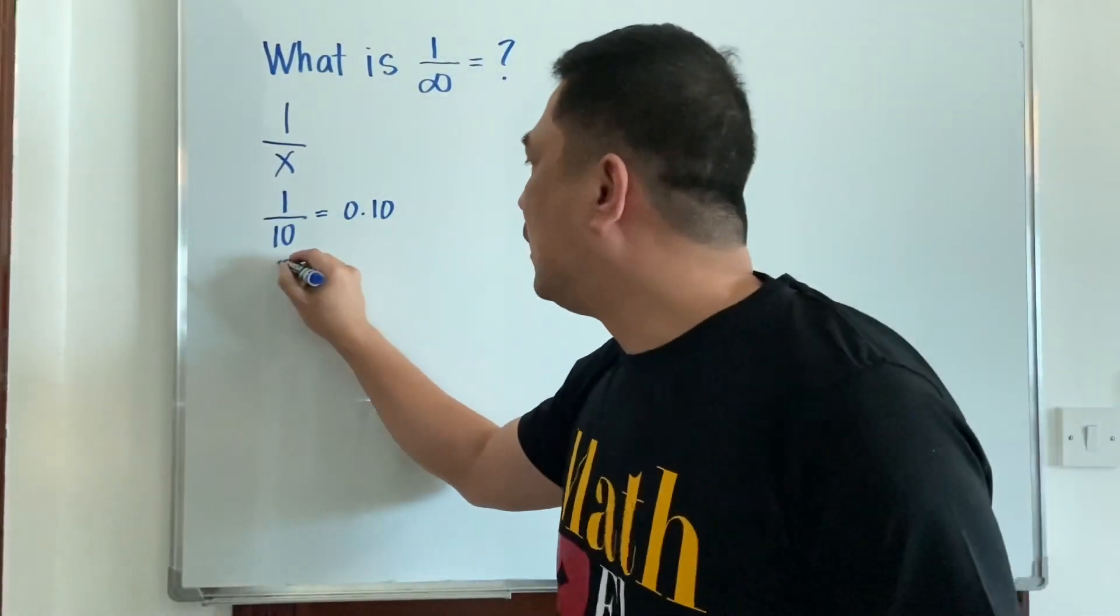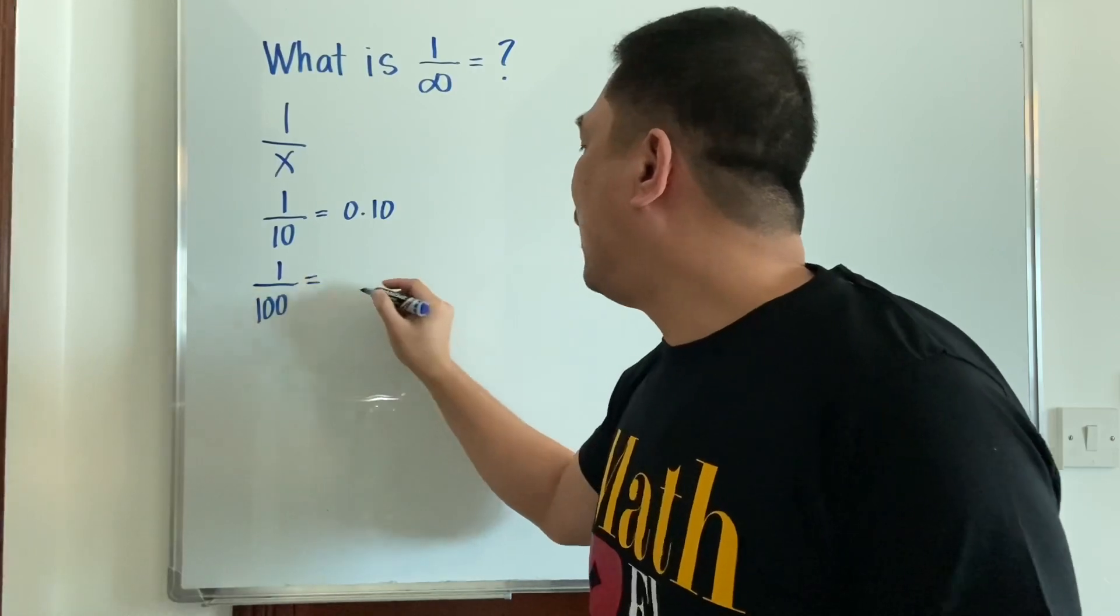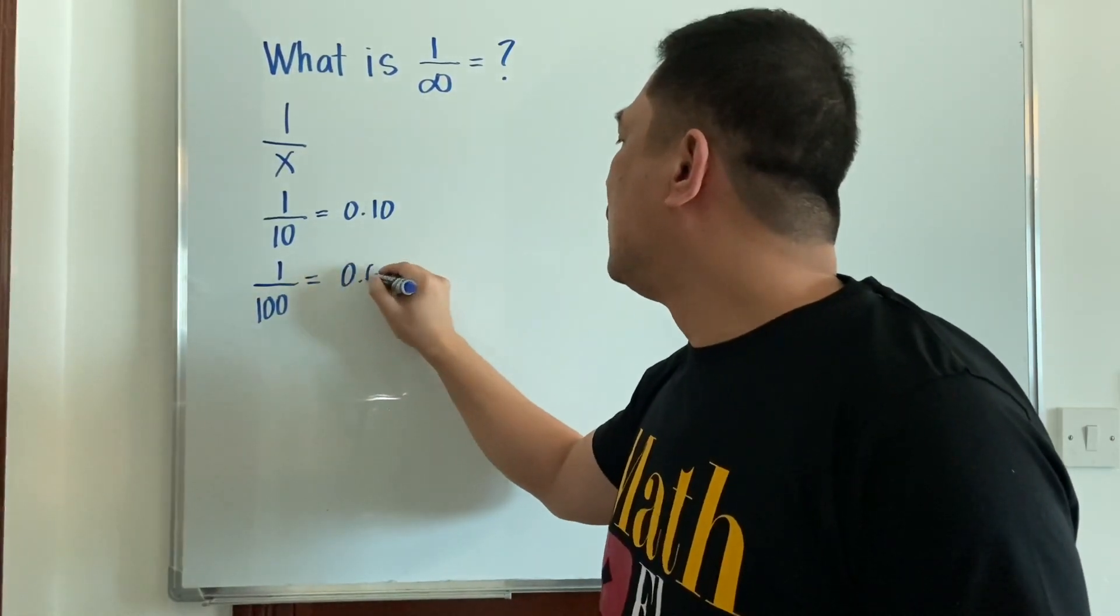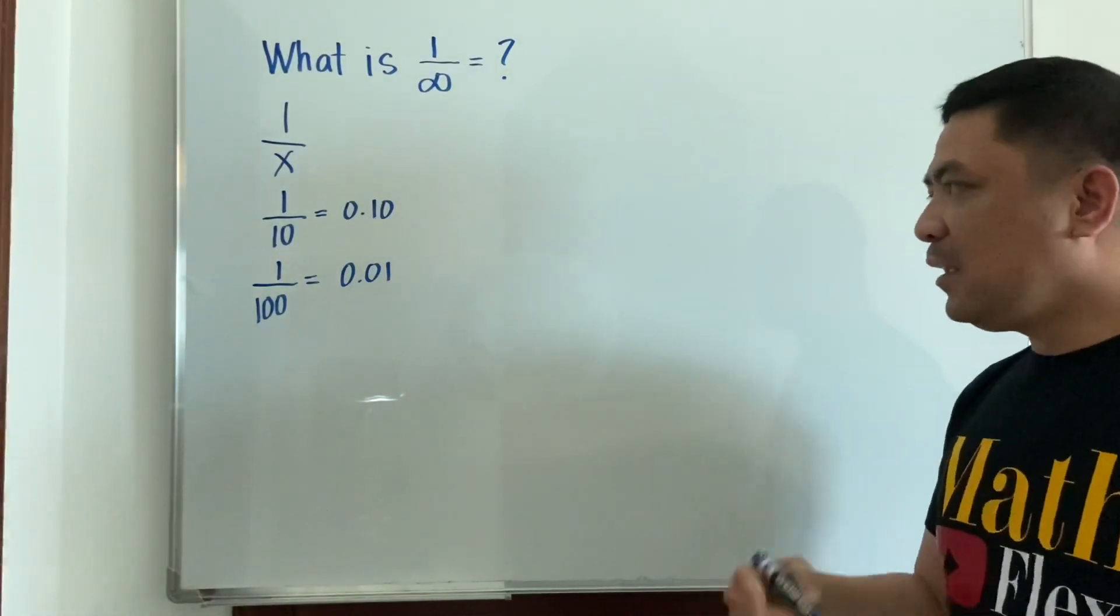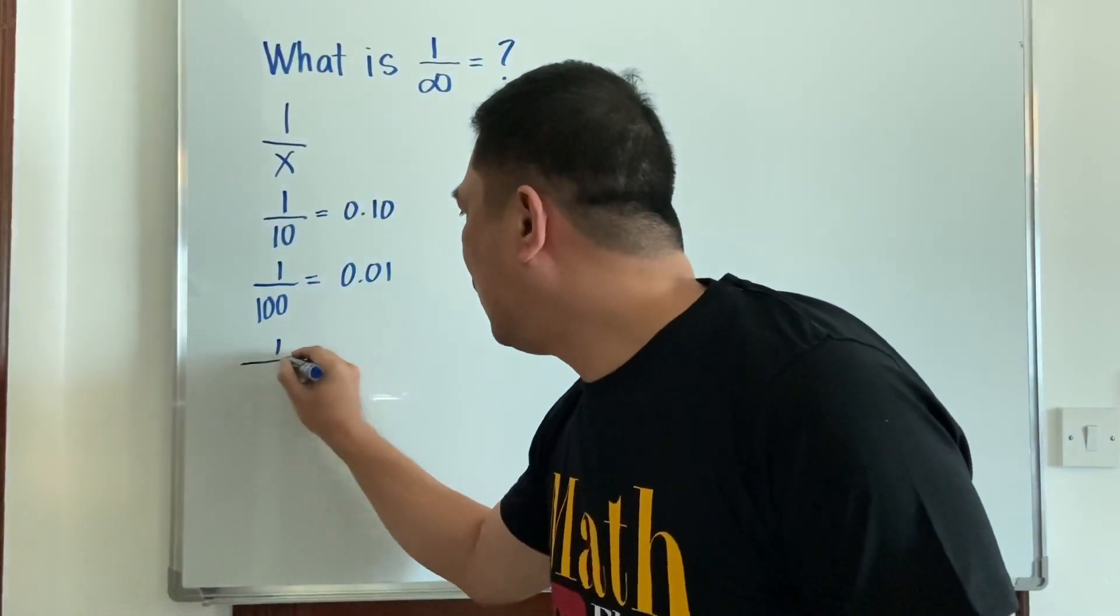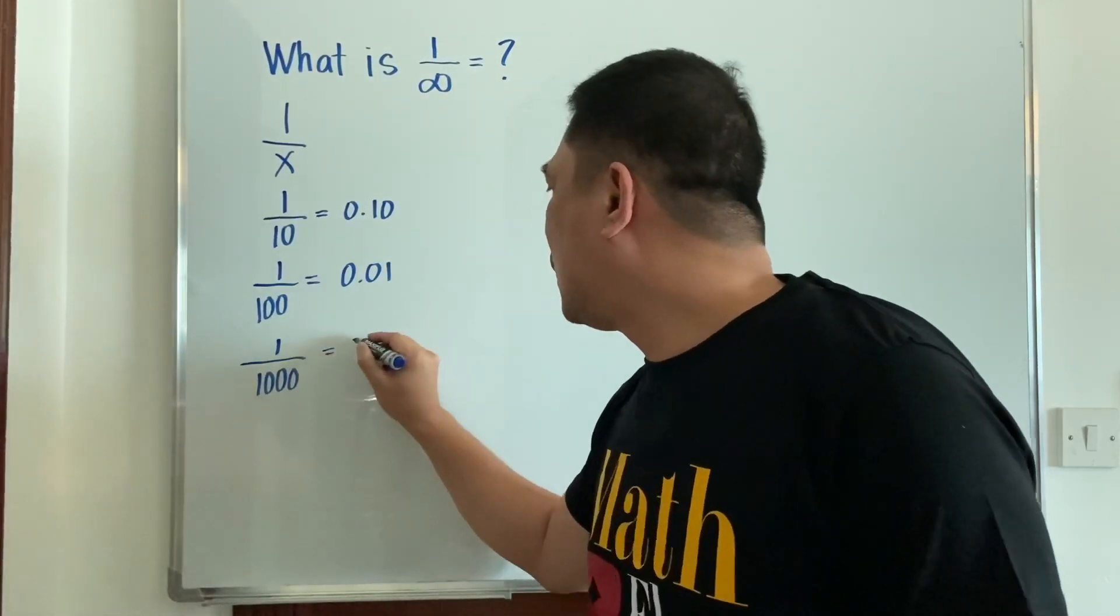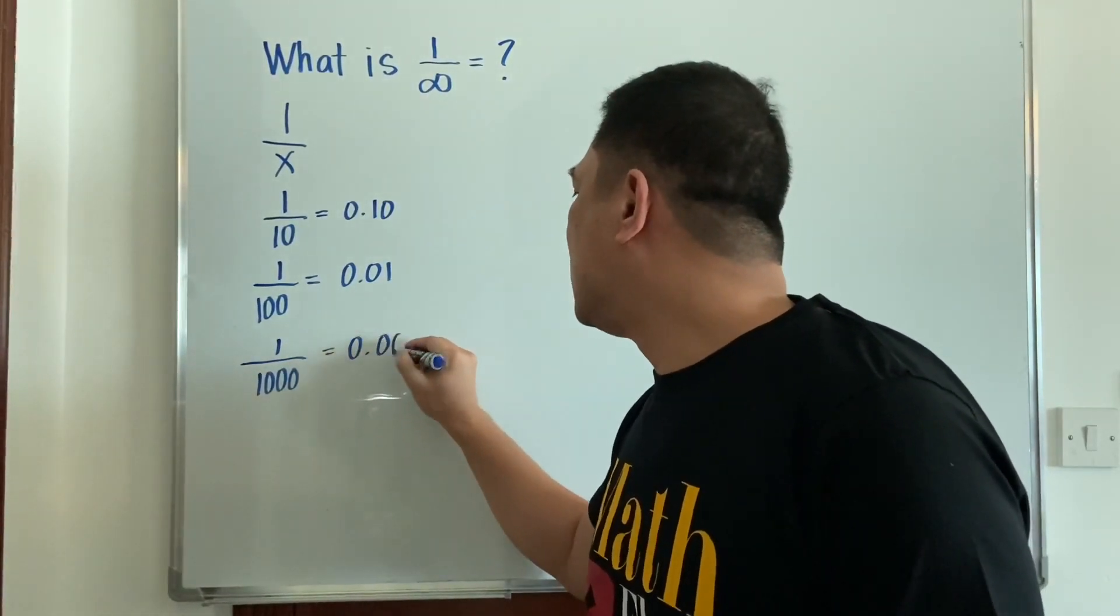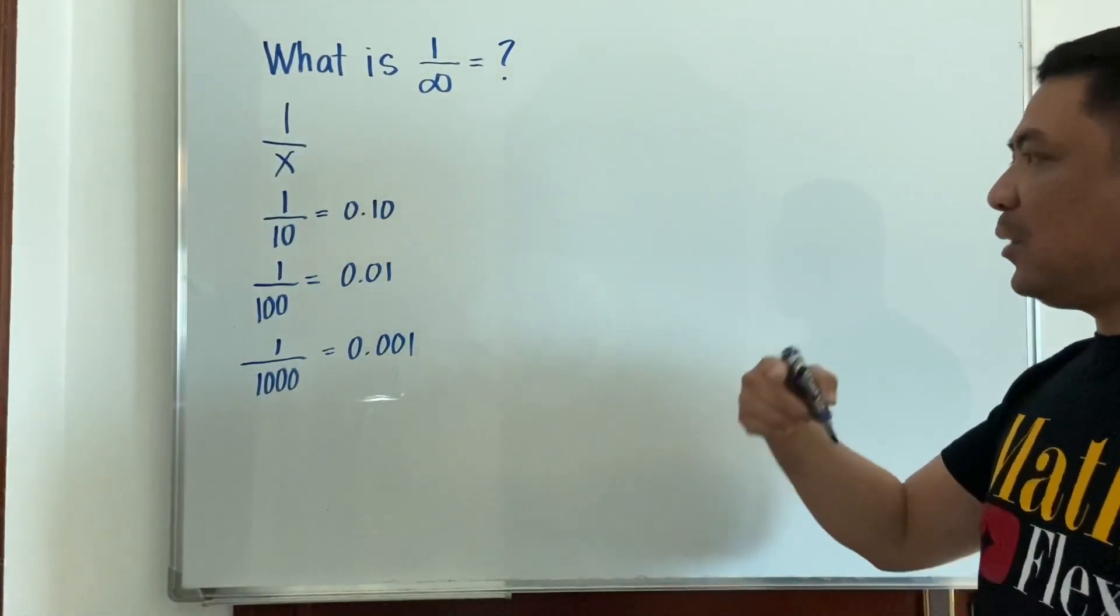So you put 1/100—this will have 0.01, right? Increasing it further, you have 1/1000 is equal to 0.001.